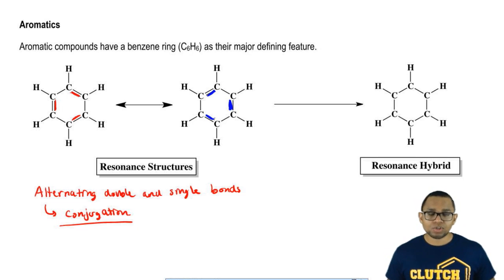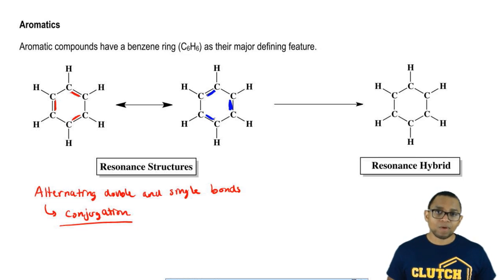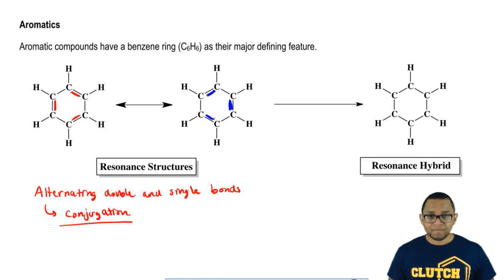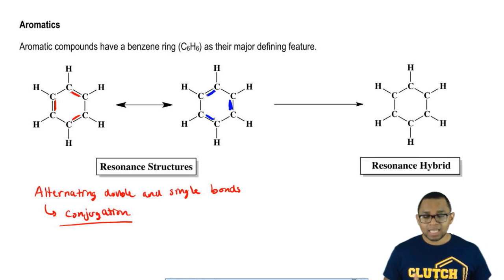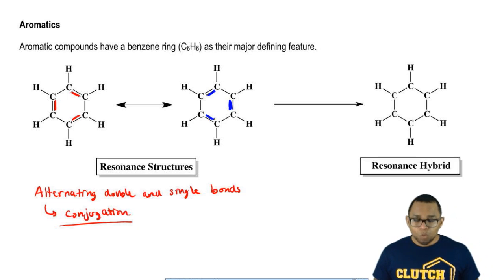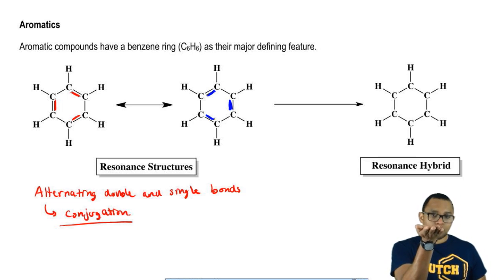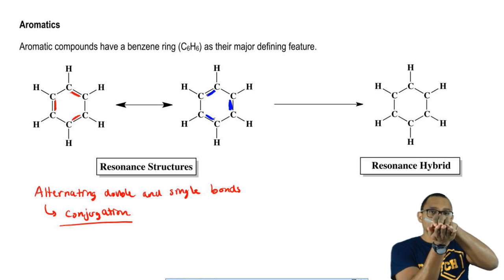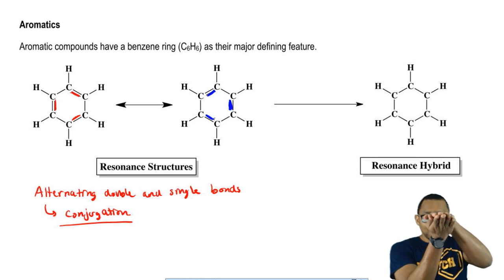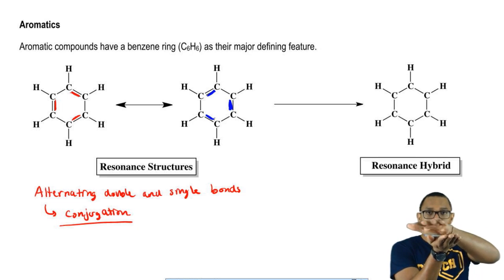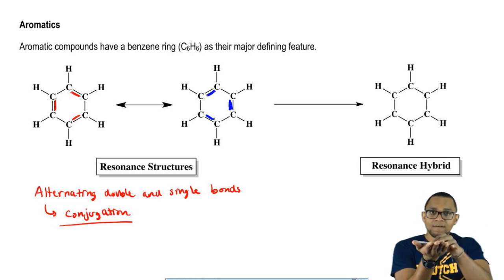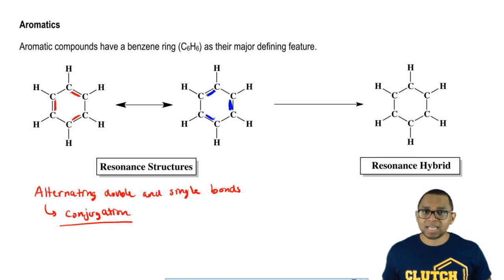Resonance structures are imaginary — they're not real. The real structure is called the resonance hybrid, which is a composite of both structures on top of each other. Think of it like two blueprints of a building: one alone doesn't have all the information you need, but when you put one on top of the other, the composite gives you the complete picture. That complete picture represents the resonance hybrid.